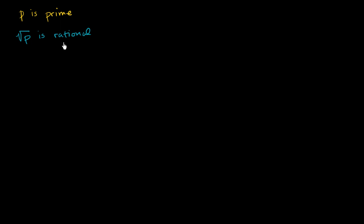So if something is rational, that means that we can represent it as the ratio of two integers. And if we can represent something as the ratio of two integers, that means we can also represent it as the ratio of two co-prime integers, or two integers that have no factors in common, or that we can represent it as a fraction that is irreducible. So I'm assuming that this fraction a over b that I'm writing right over here is an irreducible fraction.